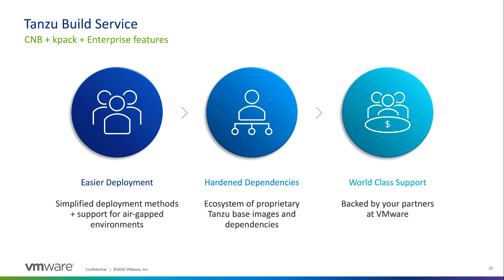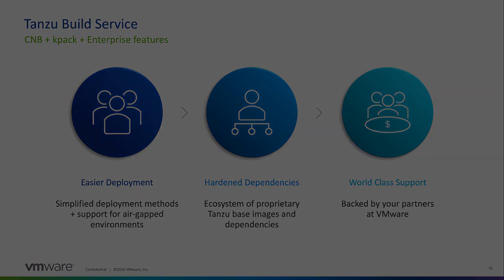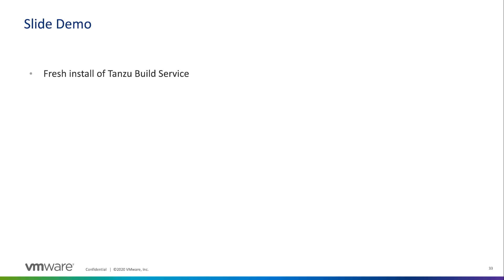So now you know what Tanzu Build Service is — that it is based on years of proven open-source performance, which is also backed by VMware. Now let's take a look at how it works. I have a Tanzu Build Service installation running on a local Kubernetes cluster. This is a fresh install of the latest GA release. I'm not going through the install process here, but I will link to a blog post detailing the install process for a proof-of-concept environment, as well as the official documentation for production use cases.